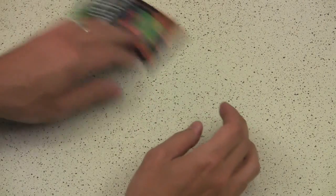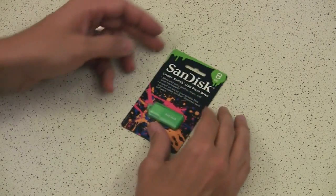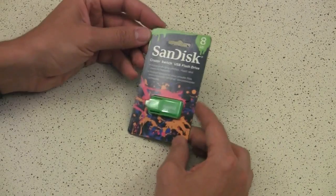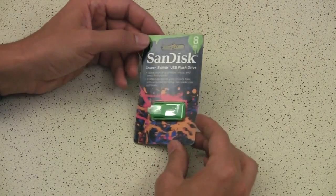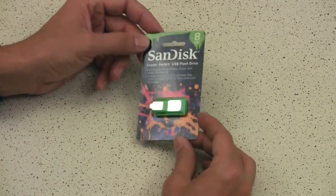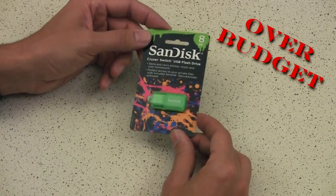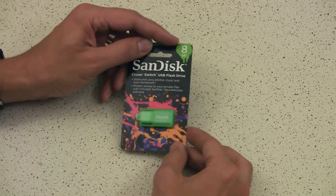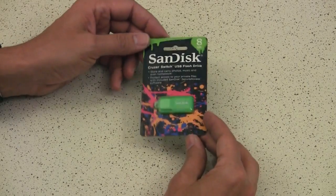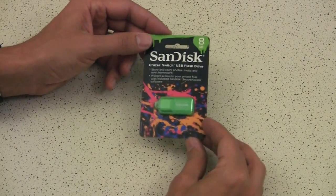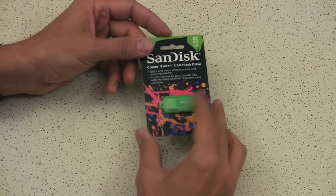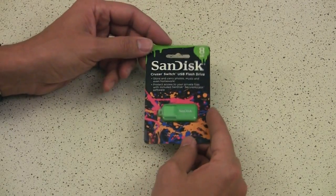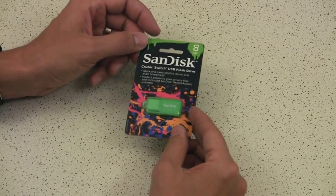Right, this is a SanDisk Cruiser Switch USB flash drive. I found these at Walmart for about five dollars, a little over. It has eight gigabytes, so you can move a lot of video around with this from computer to computer. Can't put these in a camera obviously because they're USB sticks instead of SD cards or CF cards, but handy nonetheless.